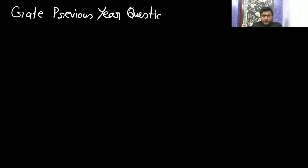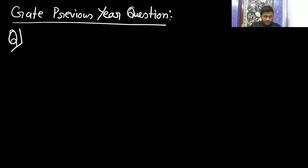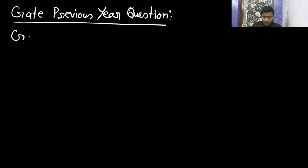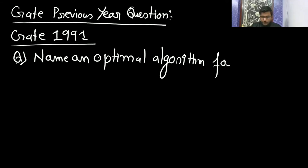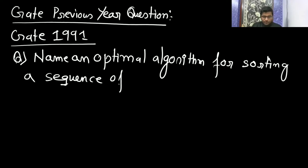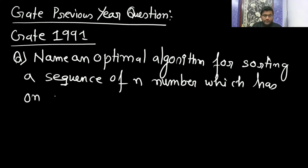Now let's look at some GATE previous year questions. This is GATE 1991. The question is: name an optimal algorithm for sorting a sequence of n numbers which has only k distinct numbers.